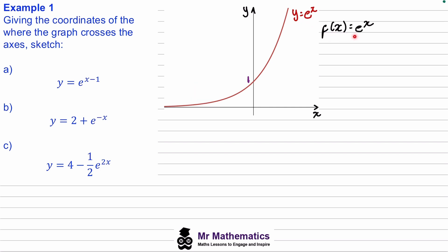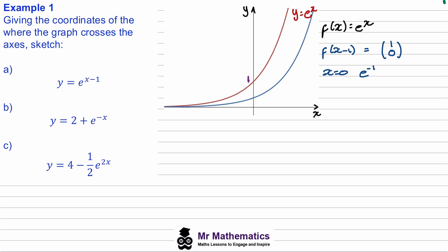If we call this our function f(x), we can use function notation to sketch each of these. For question a, we've got e to the x minus one. In terms of function notation this is f(x − 1), which from our work on transformations is a horizontal translation of one unit to the right. This means it will translate the entire curve one unit to the right. At x equals zero we get e to the zero minus one, which we can write as one over e — so that's our y-intercept. And the point (0,1) will be translated to the point (1,1).